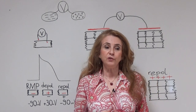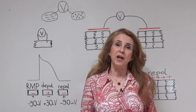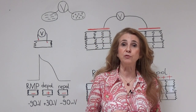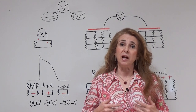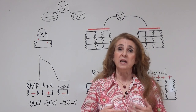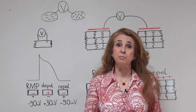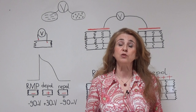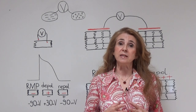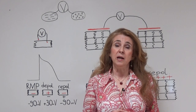After the formation of an action potential at the sinoatrial node, electrical activity — the action potential — starts spreading to the rest of the heart.